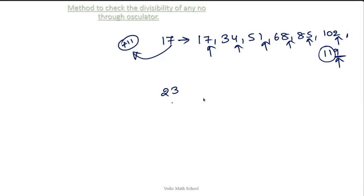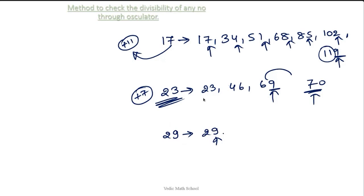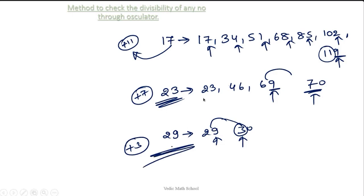What is the positive osculator of 23? Multiples: 23, 46, 69. Now 69 ends with 9, so the next value is 70, and the positive osculator is 7. So plus 7 is the positive osculator of 23. For 29, the first number itself ends with 9, so we go to 30, giving positive osculator 3. You can find the positive osculator of any number this way.